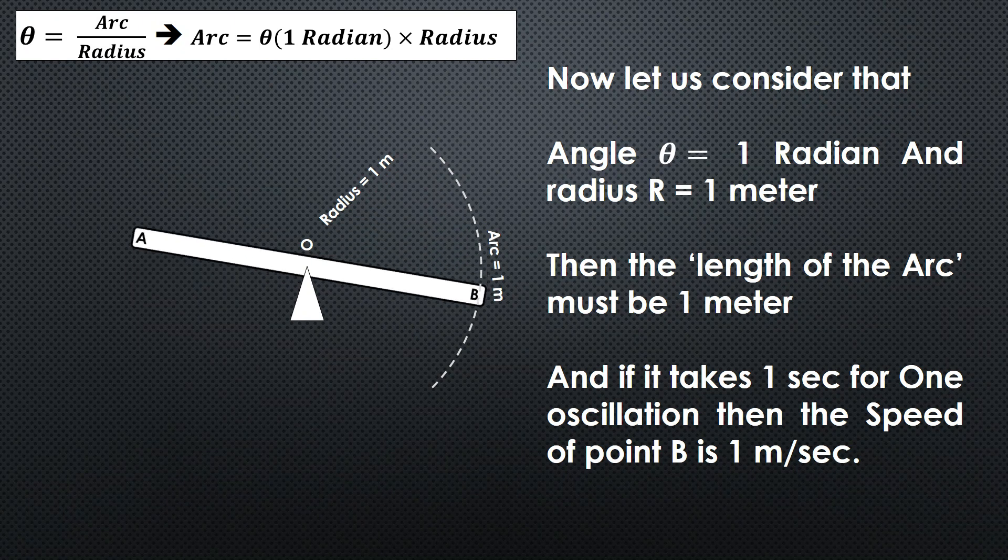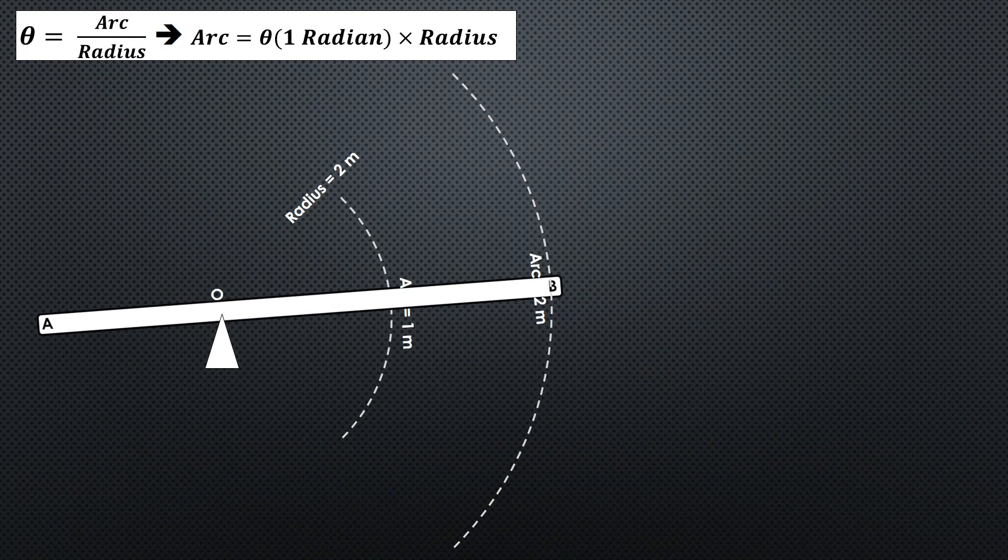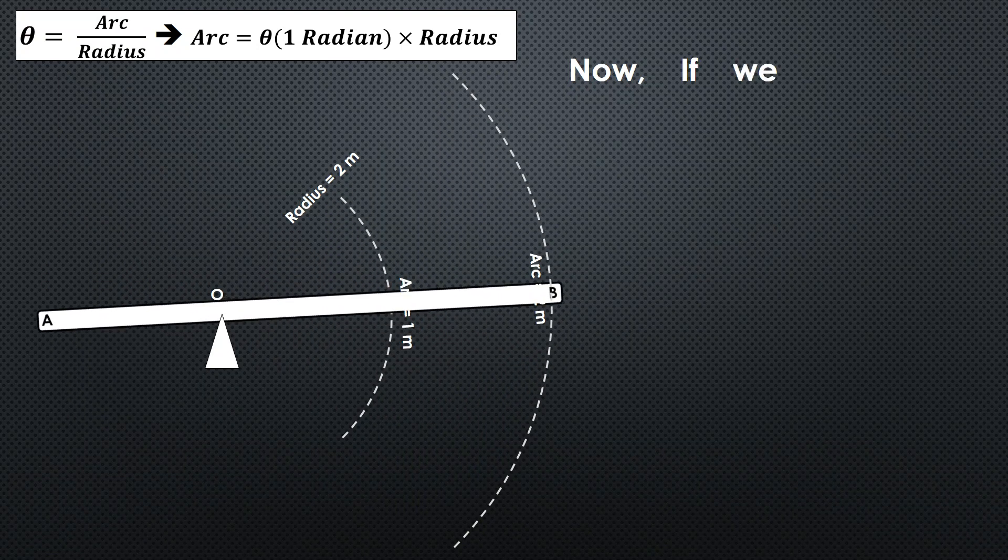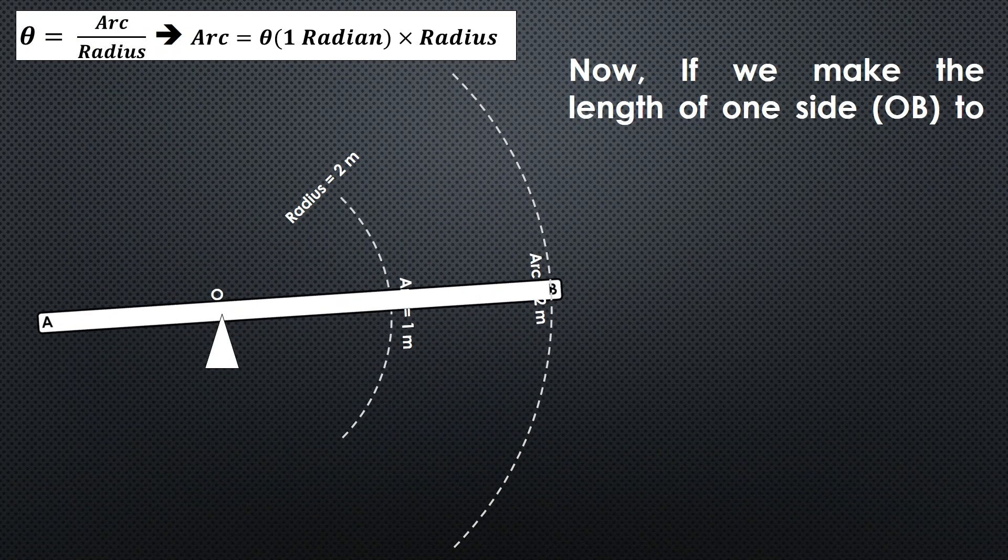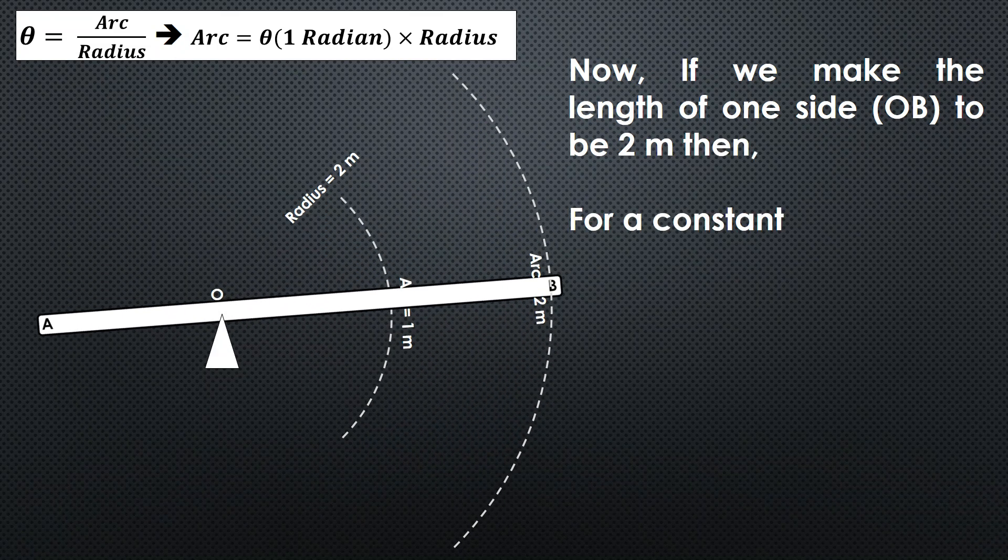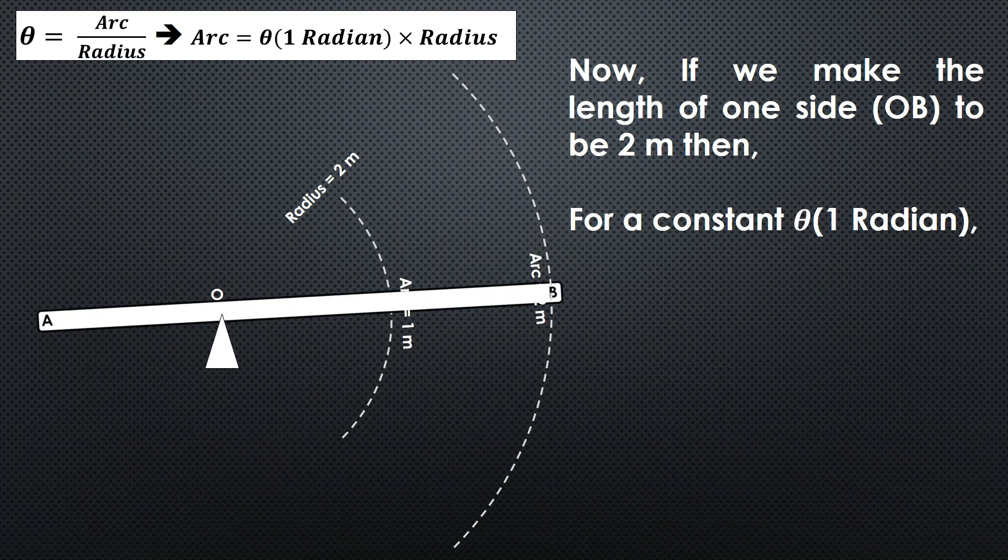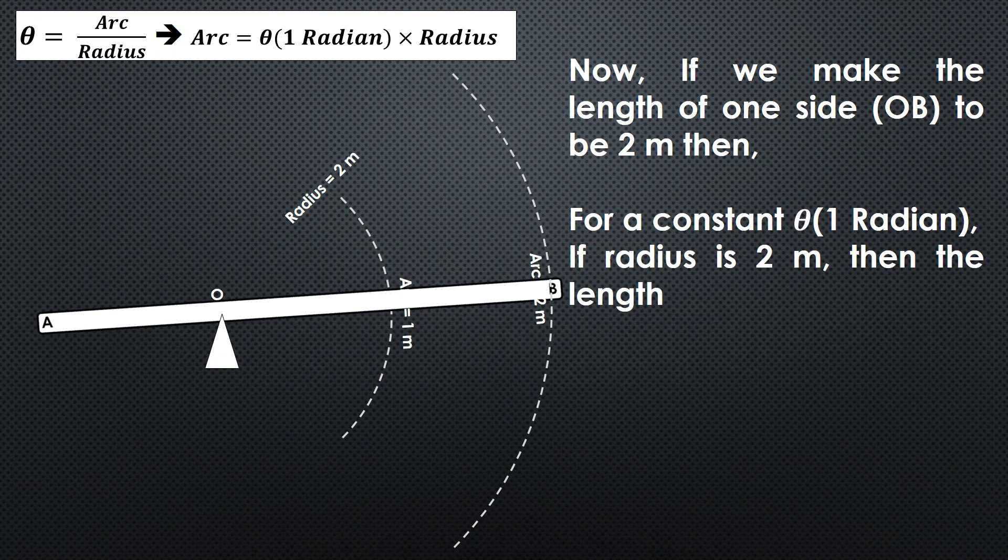Now if we make the length of one side OB to be 2 meters, double of the length we have taken earlier, for a constant theta of 1 radian, if the radius is 2 meters, then the length of the arc is also 2 meters.